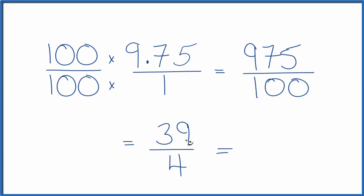4 goes into 39. 4 times 9 is 36 with 3 left over. Bring the 4 across. So you could write 39 fourths as a mixed number, 9 and 3 fourths. These are equivalent.